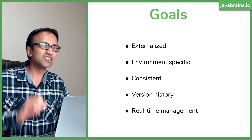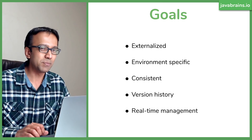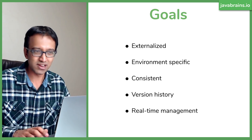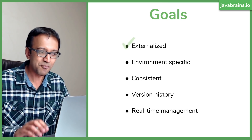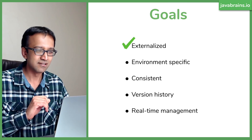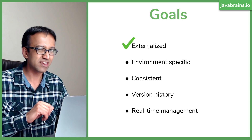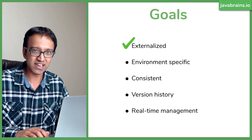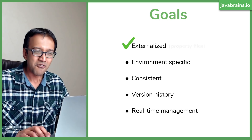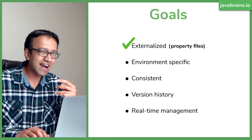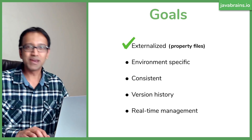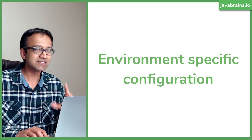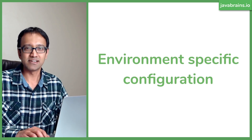What have we achieved so far with property files, YAML files, whatever else? We have made it externalized, but that's about it. We haven't even made it environment-specific — or we kind of have, but we need something better.